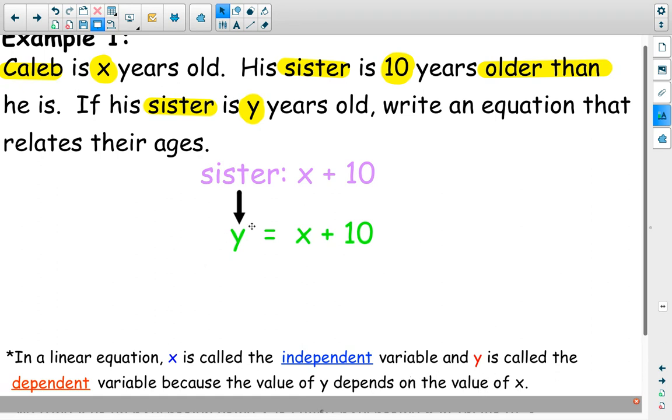We would not be able to figure out his sister's age if we didn't know how old Caleb was. So that tells us that y depends on x. So his sister's age depends on x. So y is the dependent variable and x is the independent variable in this equation.